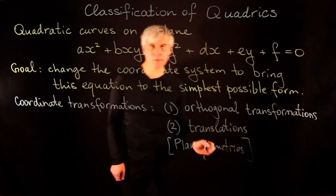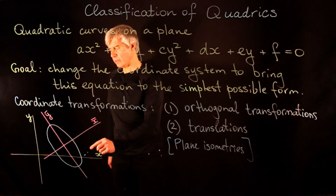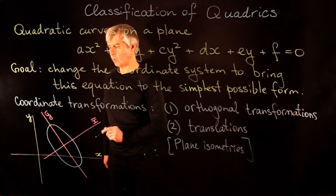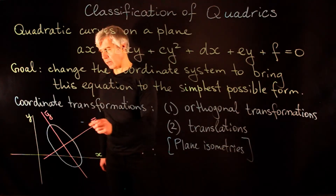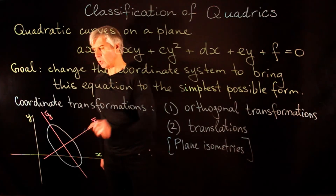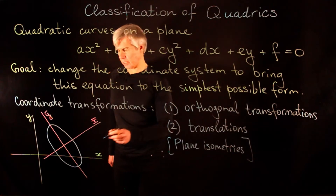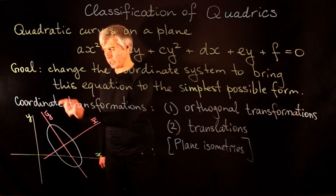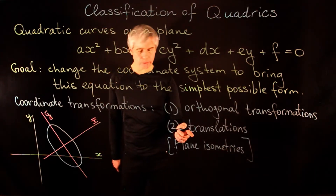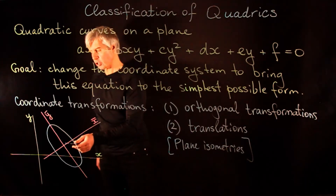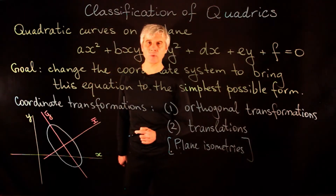These transformations preserve distances between points on a plane. We start with the curve in the given coordinate system, then find a new coordinate system where the equation becomes simpler. Because we use orthogonal transformations, the axes of the new coordinate system are perpendicular. Because we use translations, the origin of the new coordinate system need not coincide with the original origin.